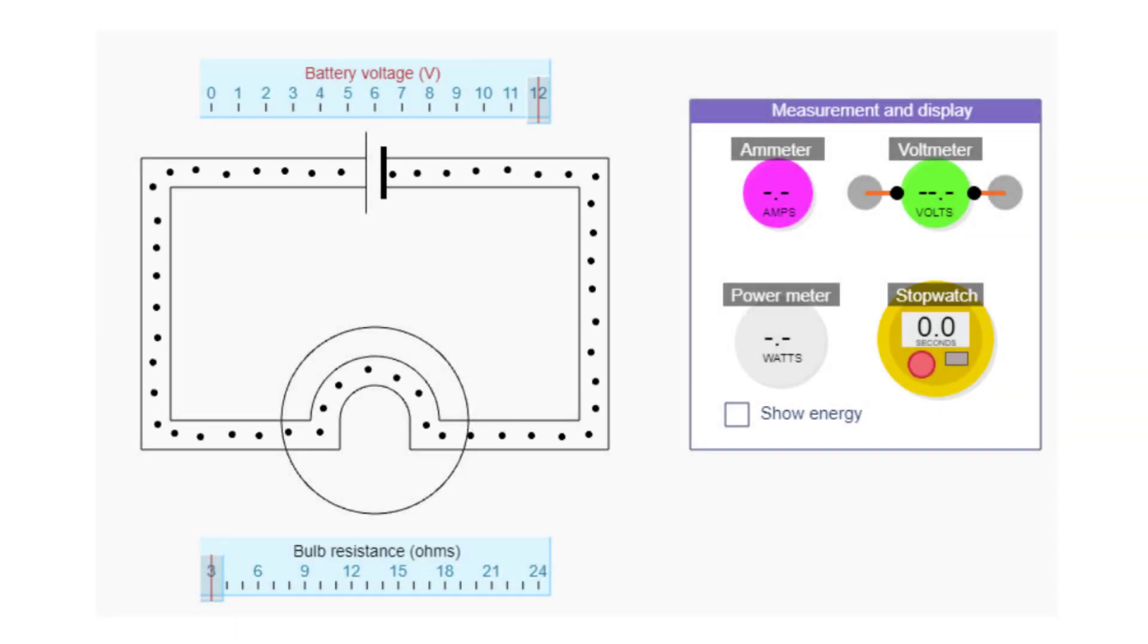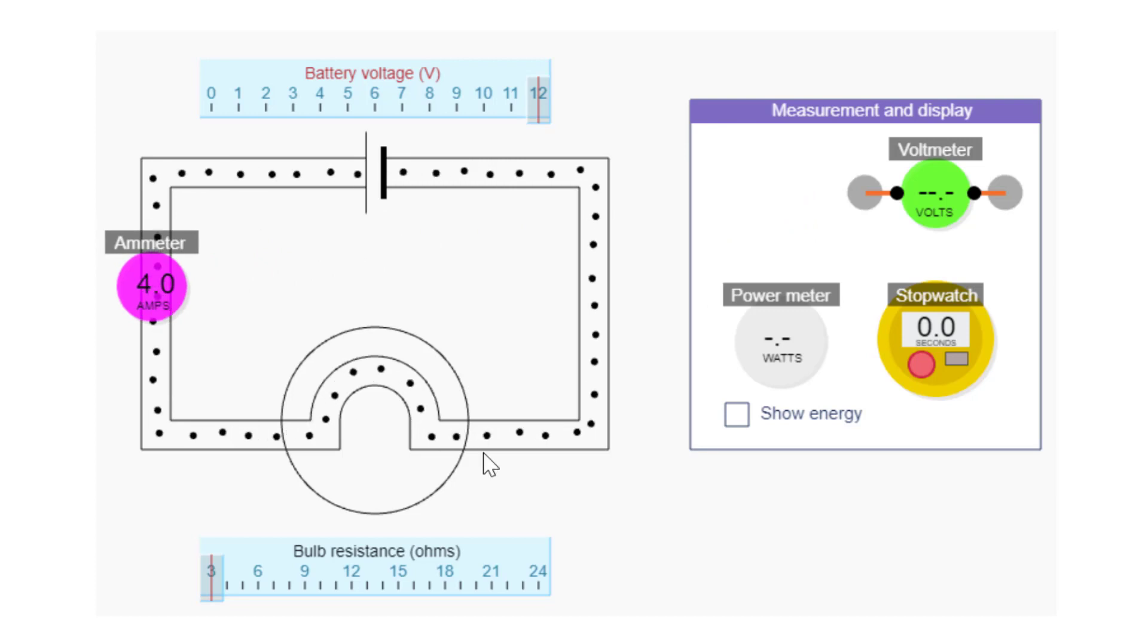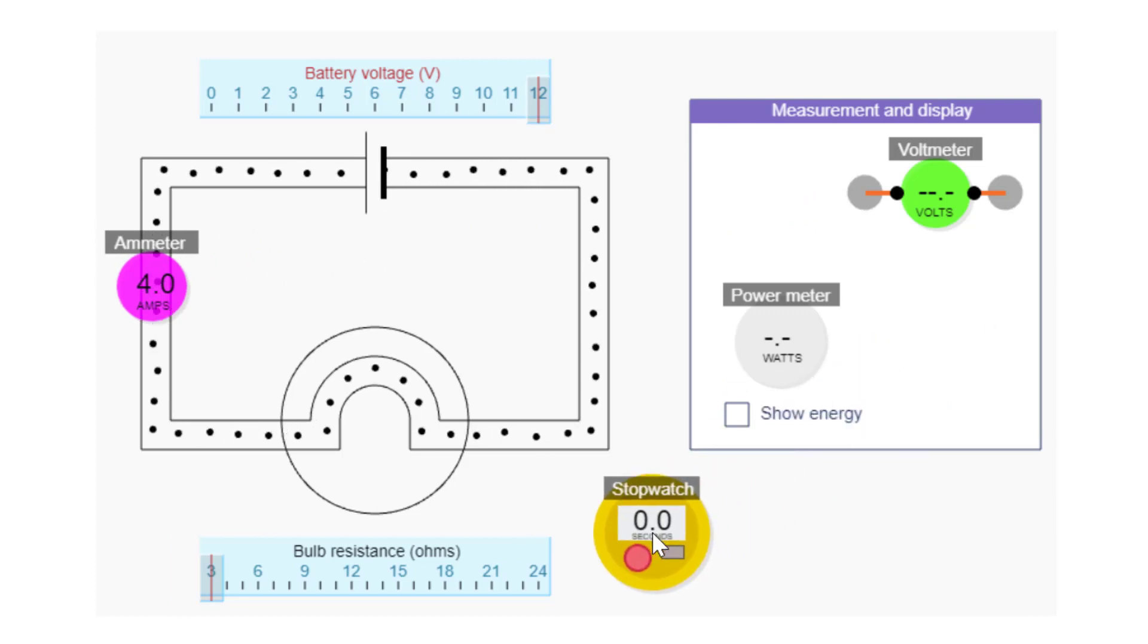But with real circuits we can't do this. However, we can measure current using an ammeter and time using a stopwatch, and then we can use current and time to calculate the amount of charge that's flowed. This is the idea.